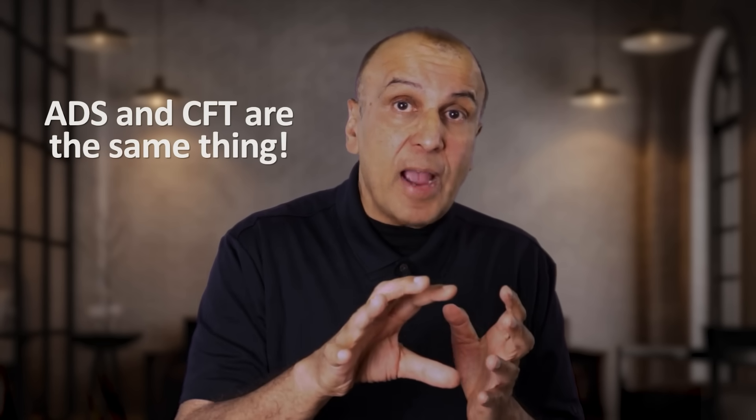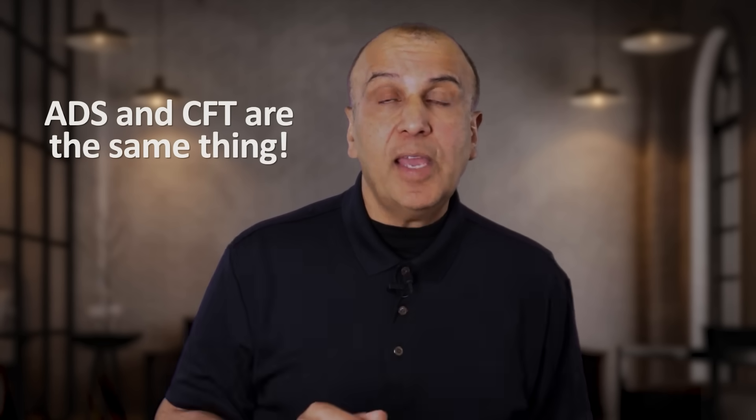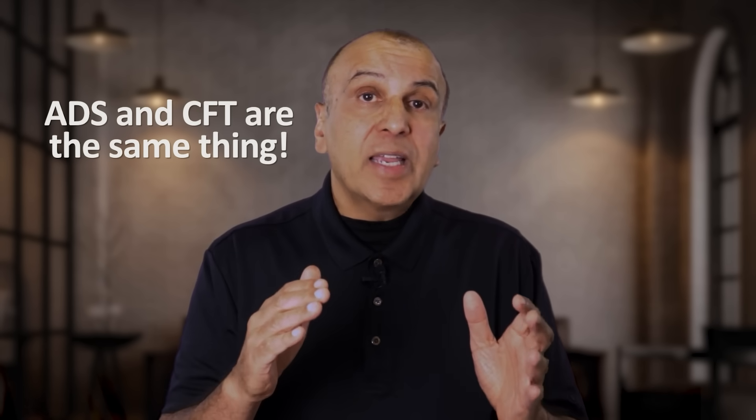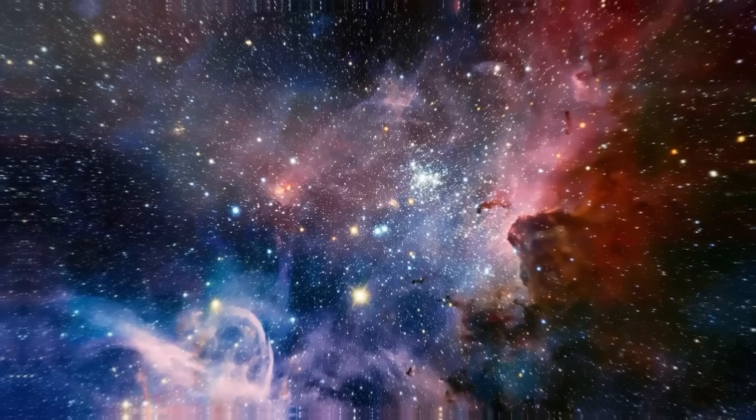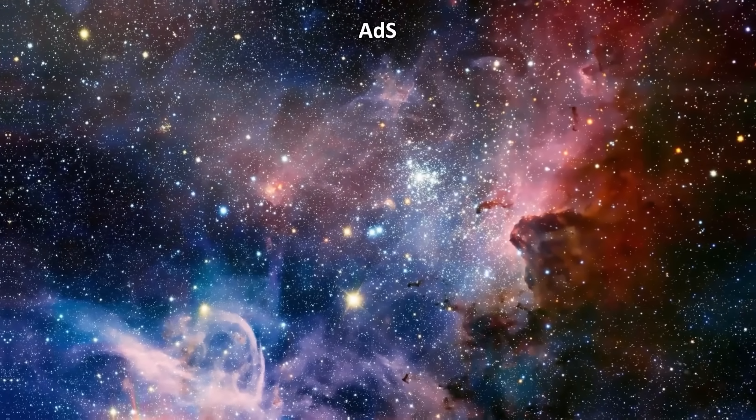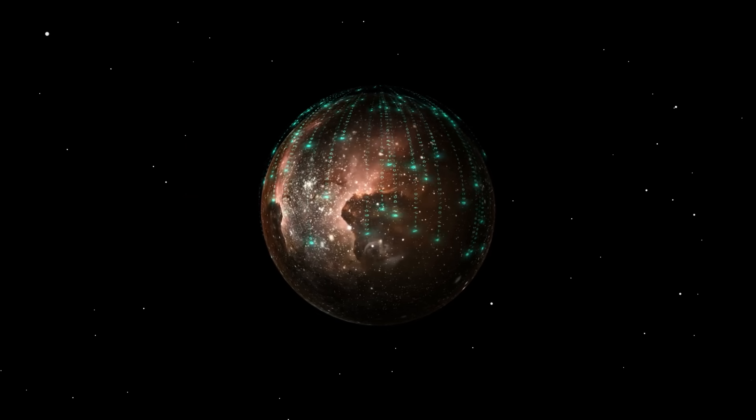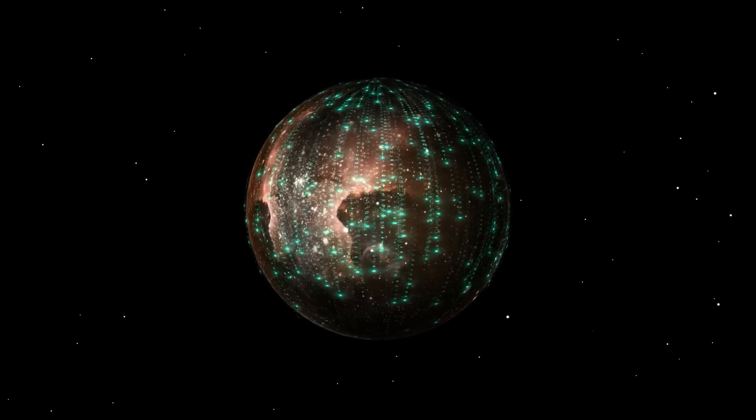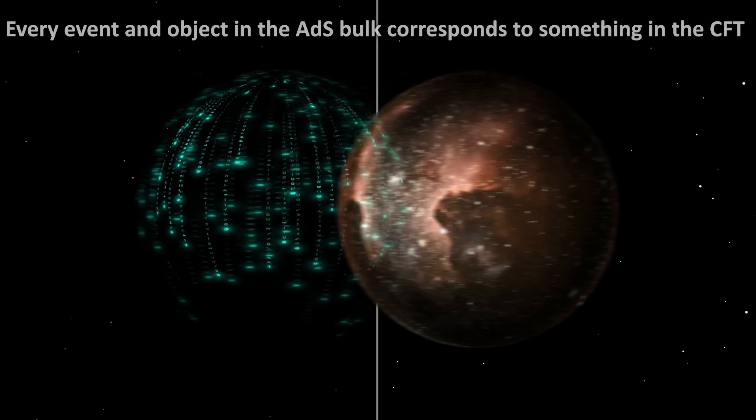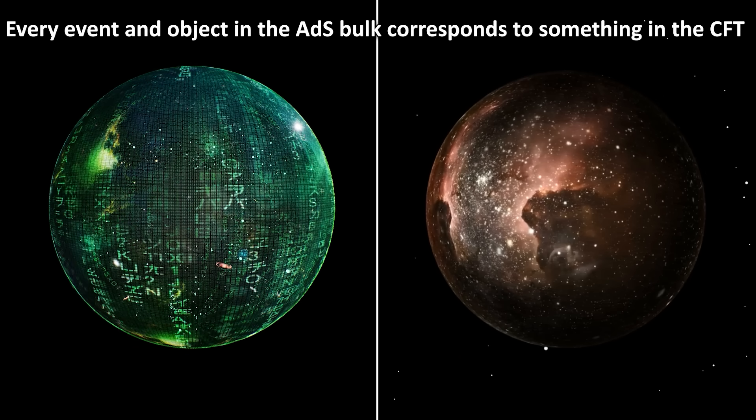Now here's the mind-blowing part. ADS-CFT says that the bulk, the ADS base with gravity, and the boundary CFT without gravity, are actually the same thing in two different forms. It's as if nature can tell one story in two different languages. One language, ADS, which talks about curved space, gravity, and things like black holes and stars inside the space. The other language, CFT, talks about fields and particles in a lower dimensional world with no gravity on the boundary. But it encodes the behavior of gravity in the ADS.